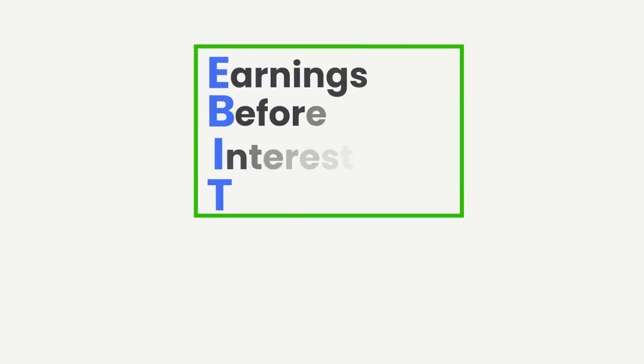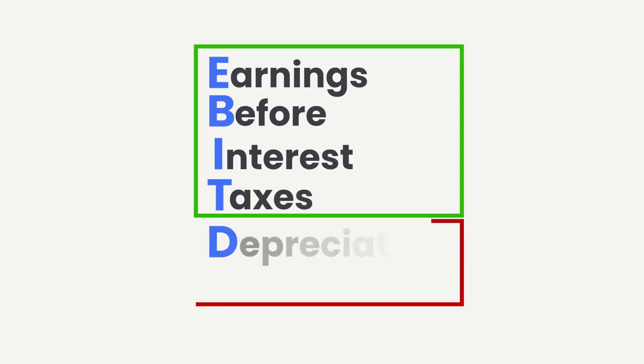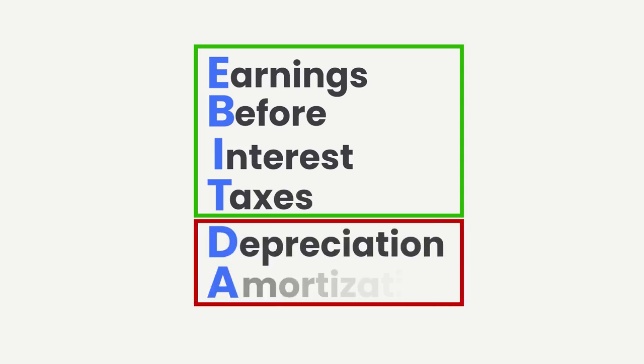Now, those terms are all easy to understand. It's the latter two terms — depreciation and amortization — that need more of an explanation.